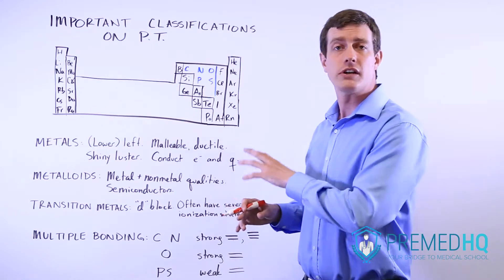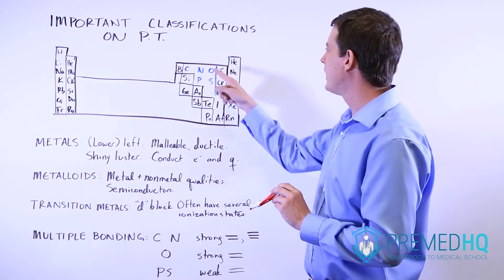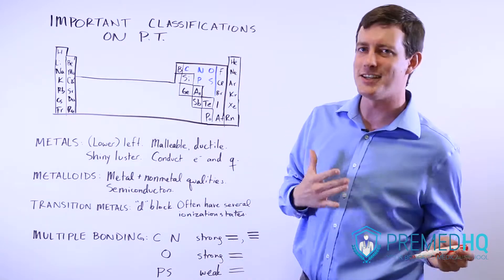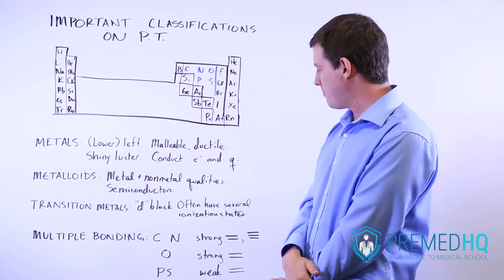Oxygen makes very strong double bonds, but does not do triple bonds because it has no desire to gain any additional electrons beyond those two that it would gain by bonding.